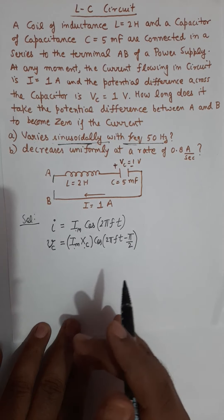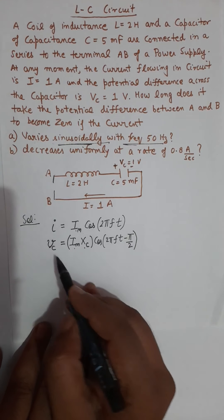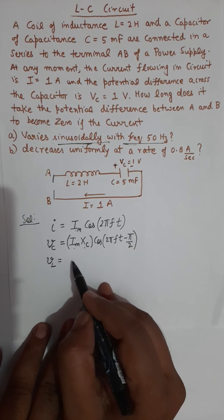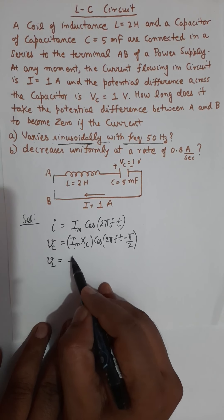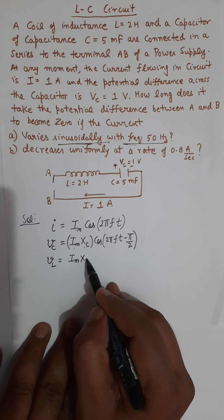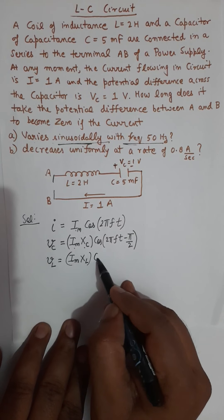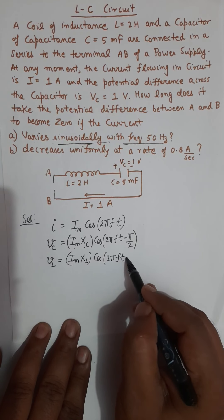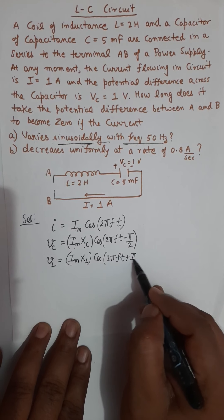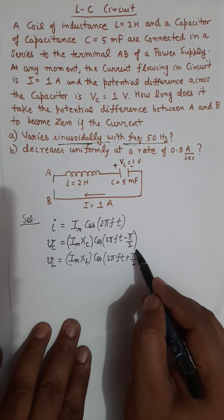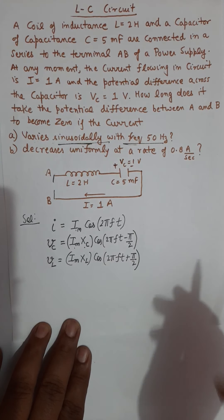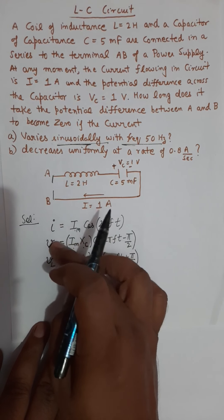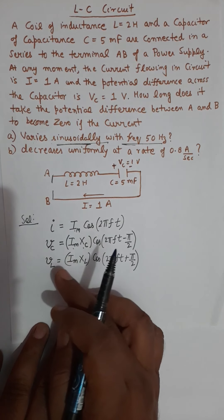Now there is an argument part. The same way you can write the voltage across the inductor as I_max multiplied by X_L times cosine of 2πft, and here you will have plus π/2 because the voltage across the inductor leads the current by a phase angle of π/2. So these are the equations of current and the voltages.